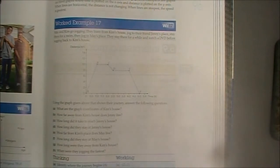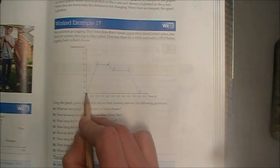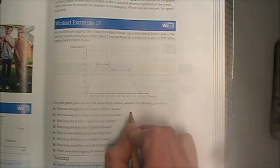Using the graph given above that shows their journey, answer the following questions. A. What are the graph coordinates of Kim's house? Kim's house is where we start, so that would be 0, 0, 0 on the x-axis, 0 on the y-axis.